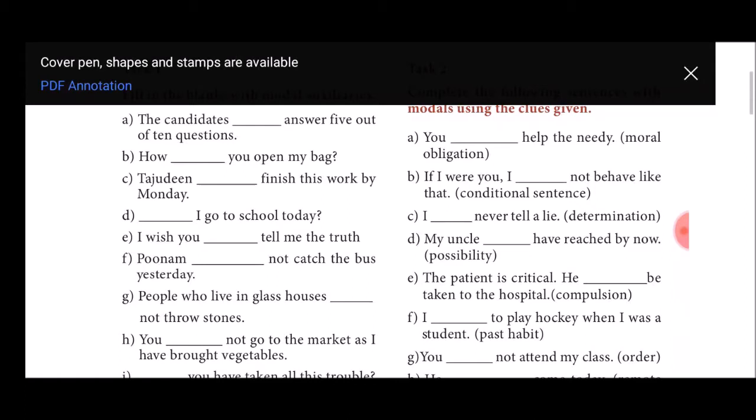E sentence: I wish you would tell me the truth. You would tell me the truth. Mostly the sentence with wish, the next sentence in would form. F sentence: Poonam could not catch the bus yesterday.